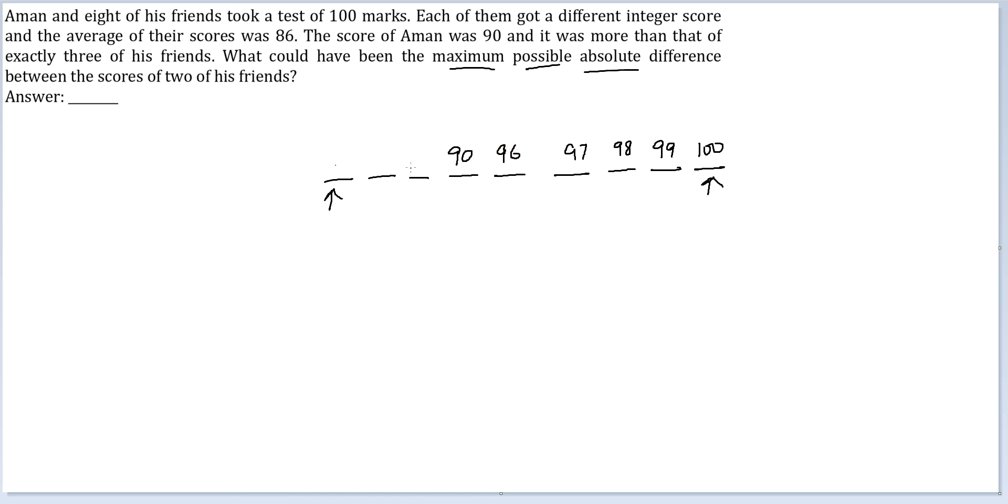But these two people are supposed to be lesser than 90. So this will be 89. This will be 88.